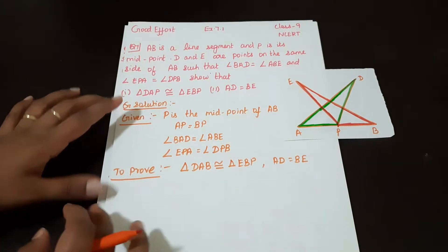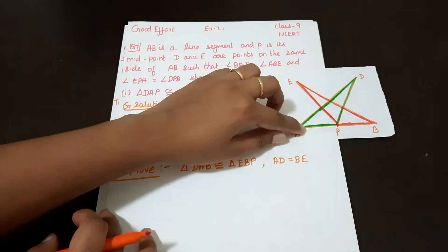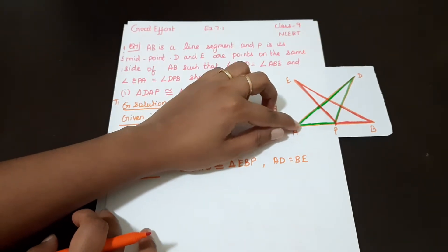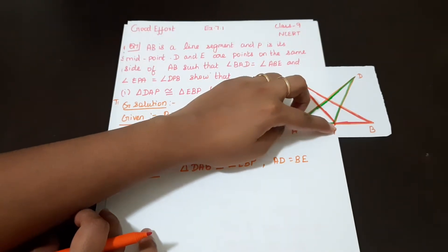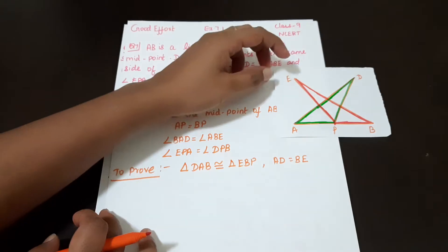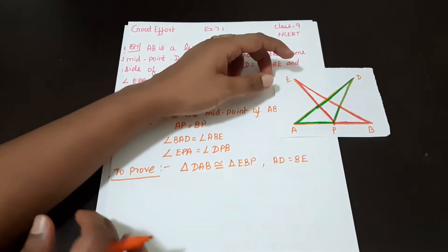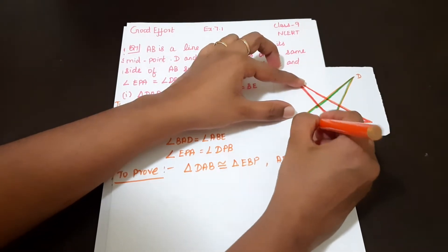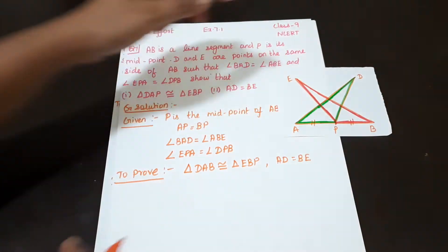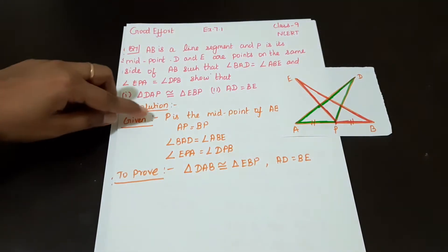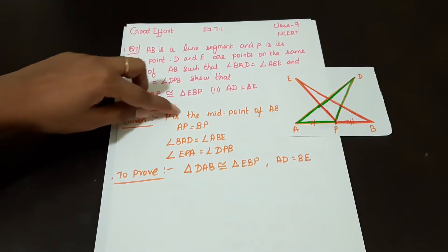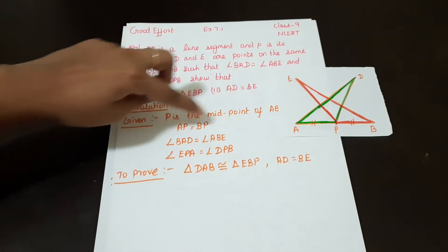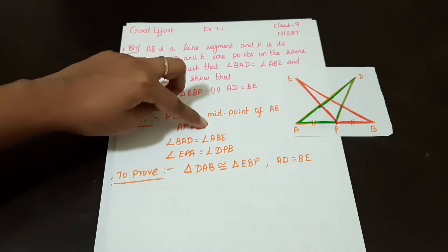AB is a line segment and P is the midpoint. So P is the midpoint, which means AP is equal to BP. Given: P is the midpoint of AB, so AP is equal to BP.